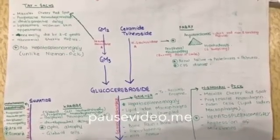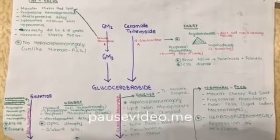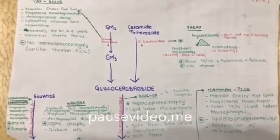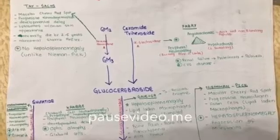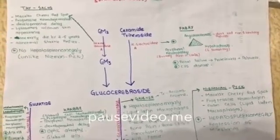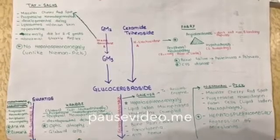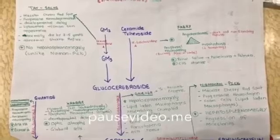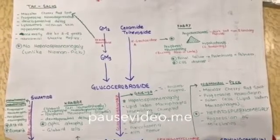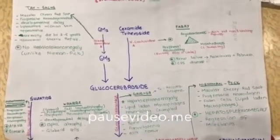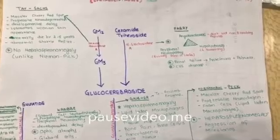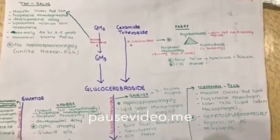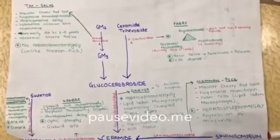In Niemann-Pick Disease, the macrophages are lipid-laden — that is, there are foam cells — and there is regression of milestones. If a child has achieved a certain milestone, he forgets it and there is regression. Progressive neurodegeneration is a common point in both diseases. In Tay-Sachs Disease, there is deficient hexosaminidase A, causing GM2 ganglioside buildup. In Niemann-Pick Disease, there is deficiency of sphingomyelinase, causing sphingomyelin buildup.